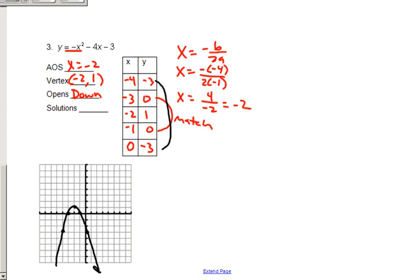I see that I have two solutions on this graph. One right here. One right there. The solutions are going to be negative 3, 0. And negative 1, 0.